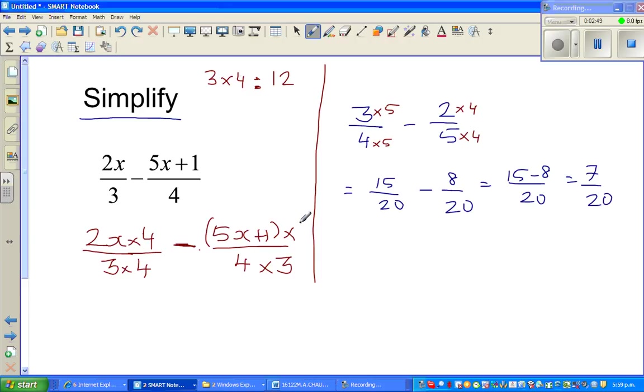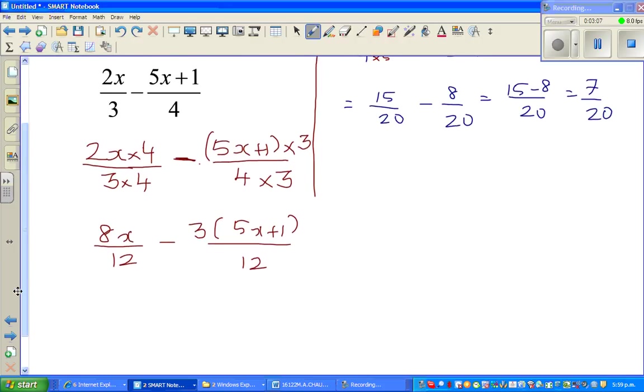So this becomes 8x over 12 minus, now this 3 I'm going to write like this: minus 3 bracket 5x plus 1 over 12. Now here you probably may not be making mistakes. The next step is where most of you can go wrong.